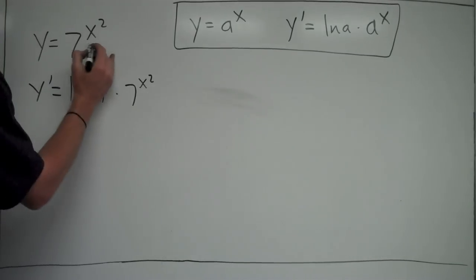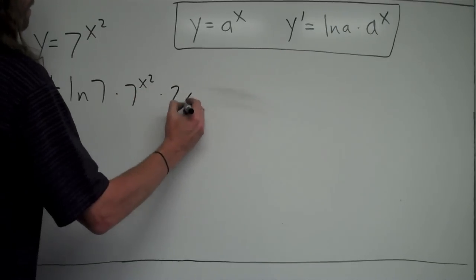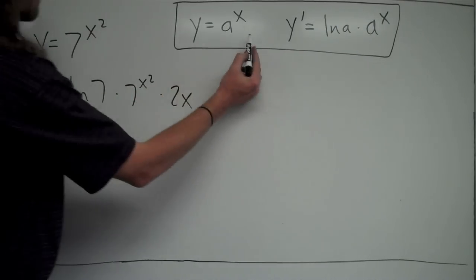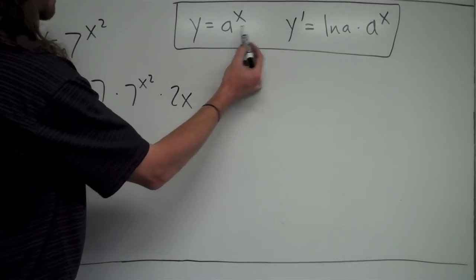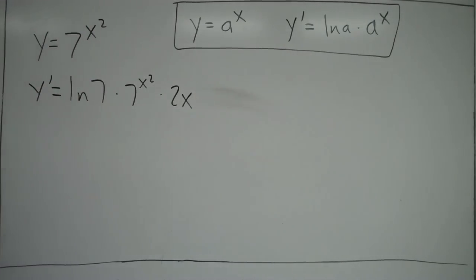The only difference is this x squared here is what we're calling an inner function, and it's something other than just x, so we have to apply the chain rule here, which means we have to multiply times the derivative of the inner function, which is 2x at the end. The reason why we don't have to multiply it by anything here is because the derivative of the inner function is just 1. So you don't have to put times 1.